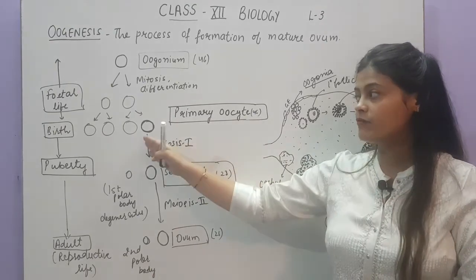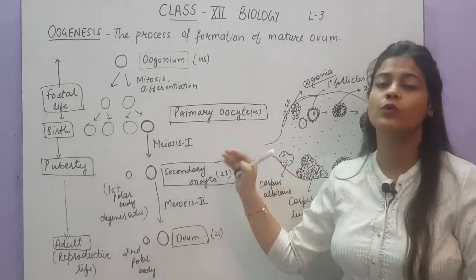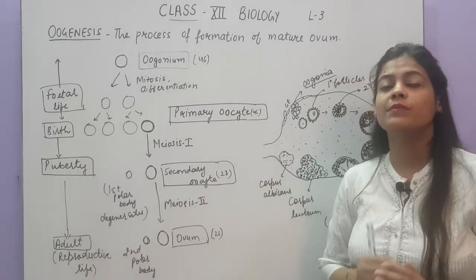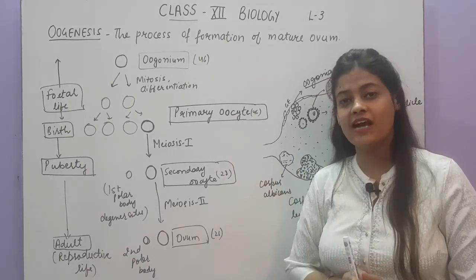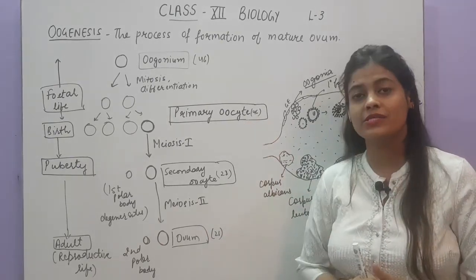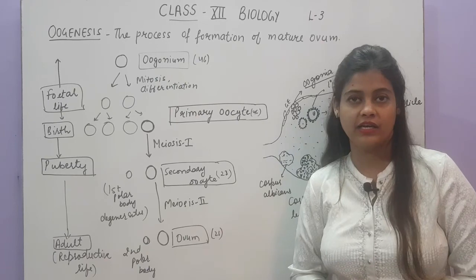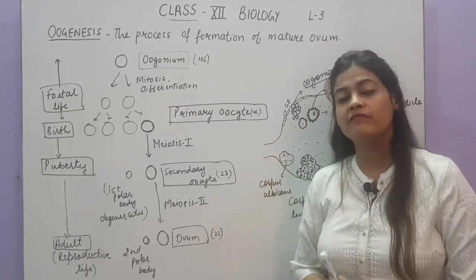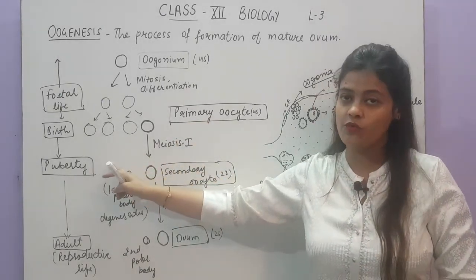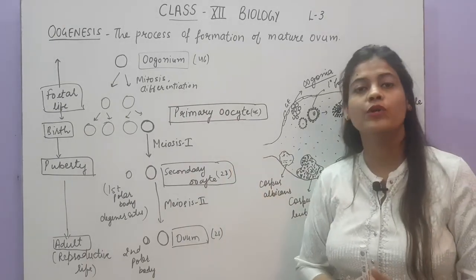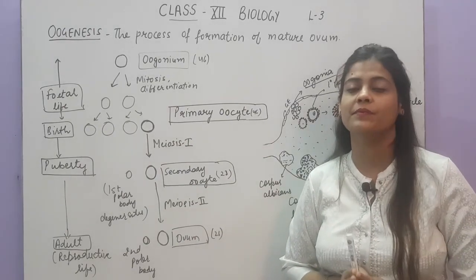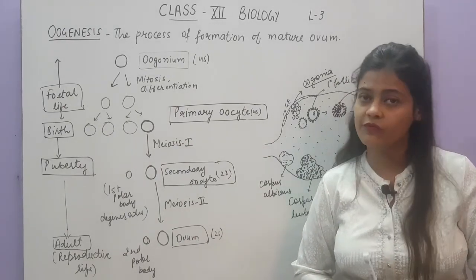These primary oocytes after birth will undergo further development to form the ovum, but that only begins at puberty. So from birth till puberty, the primary oocytes in the ovaries start degenerating, but not all. Out of the 4 to 5 lakhs primary oocytes present at birth, many will undergo degeneration. So at the time of puberty, only 60,000 to 80,000 primary oocytes will be left in each ovary.